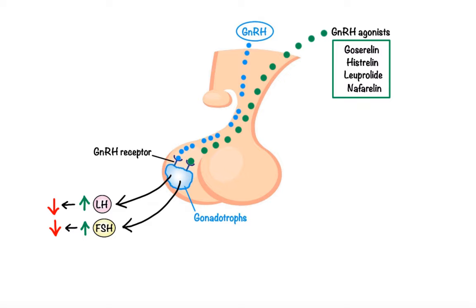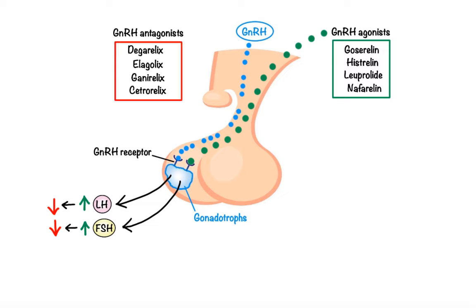In comparison to GnRH agonists, GnRH antagonists such as degarelix, elagolix, ganirelix, and cetrorelix promptly suppress pituitary gonadotropin by competitively blocking the GnRH receptor, thereby avoiding the initial stimulatory phase of the agonists. The resulting suppression of LH and FSH leads to profound inhibition of estrogen and androgen synthesis, making these agents effective in treatment of hormone-sensitive cancers as well as various gynecological disorders.